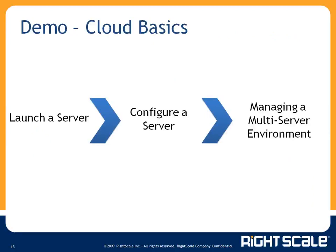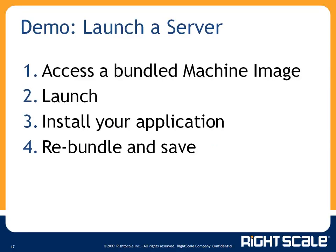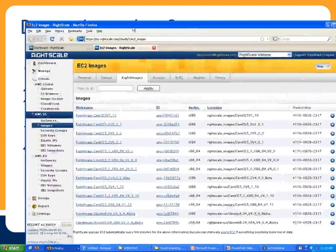We're going to take you through a few demos in sequence. First, a simple example of launching a server using a machine image. Then how you configure that server and load your application. Finally, a commercial deployment — a cluster of servers, managing a multi-server environment. This first demo uses Amazon Web Services — we'll show accessing a bundled AMI, launching it through RightScale, installing your application onto it, and then rebundling that image to save for later use. I'm going to turn things over to David.